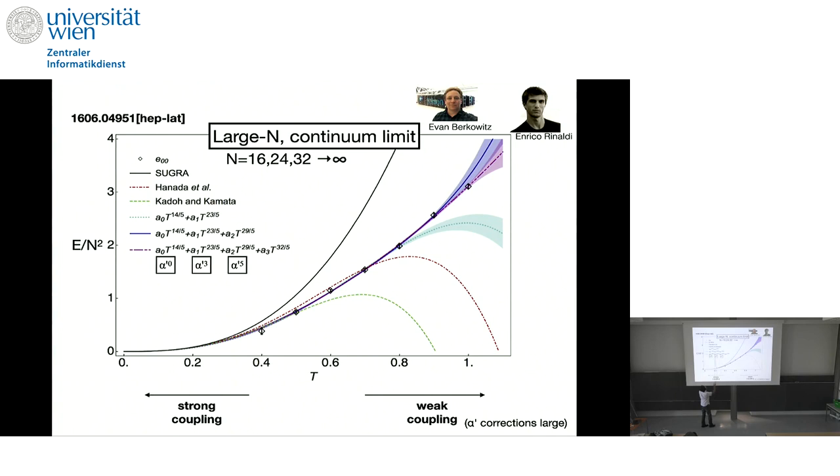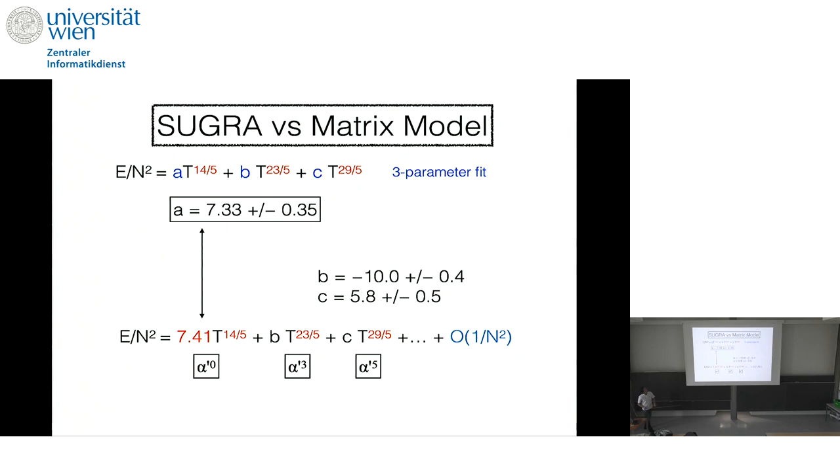And these lines are fit. Before this 2016 paper, the 2016 paper gave a better result. And this is a string theory prediction. So this coefficient and these powers are known. But like this B and C and the one-over-N correction are not known. And this part is super gravity and these are string alpha prime.